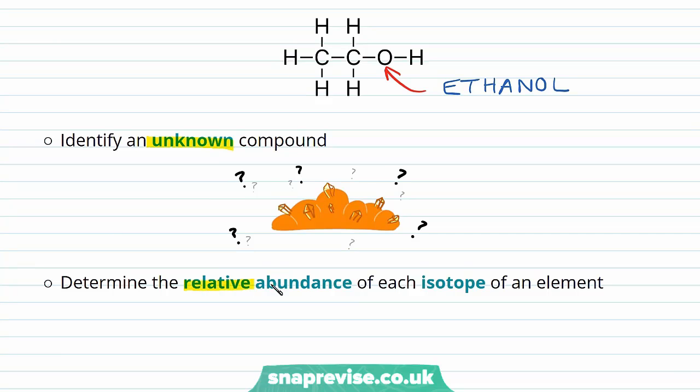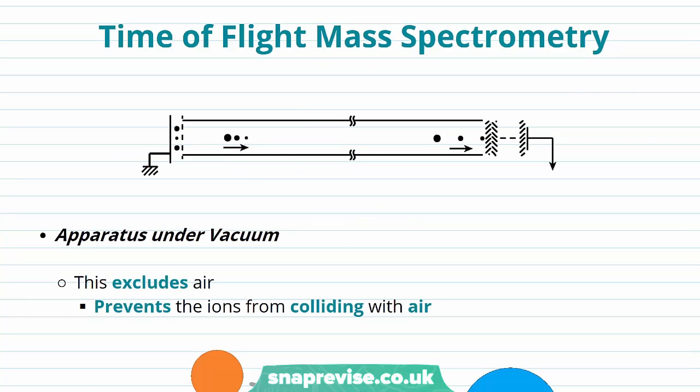And it can help us to determine the relative abundance of each isotope of an element, something we'll take a closer look at in this video. So now I've briefly met the idea of mass spectrometry, let's have a look at a specific type of mass spectrometry.